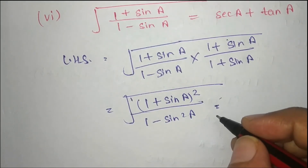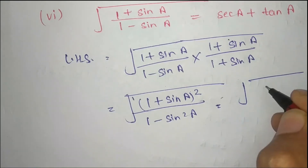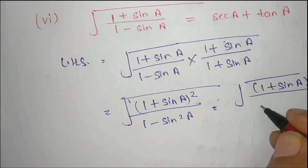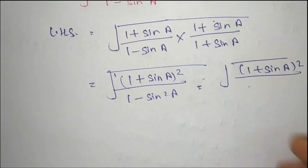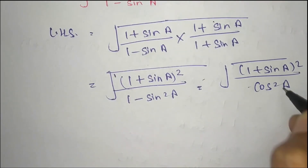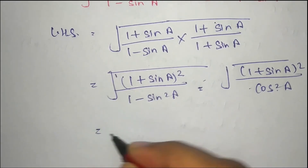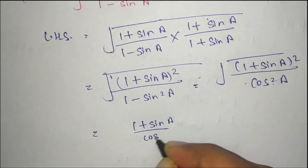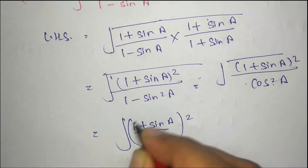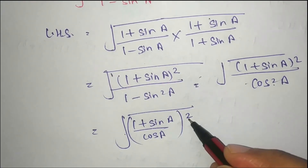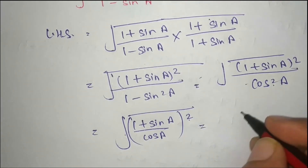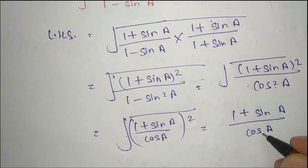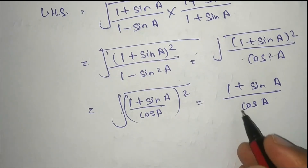Now we can write this as √((1 + sin a)² / (1 minus sin²a)). Using the identity 1 minus sin²a equals cos²a, the denominator becomes cos²a. Now we have a square root of a perfect square, so the square root and square cancel, giving us (1 + sin a) upon cos a.